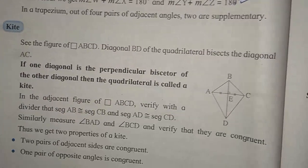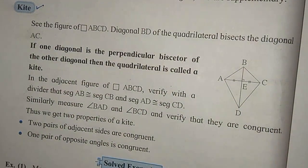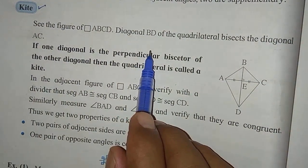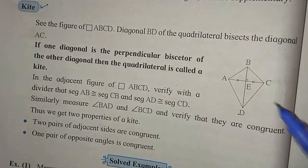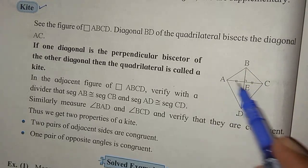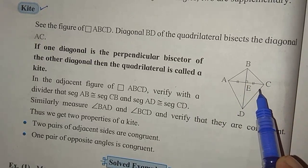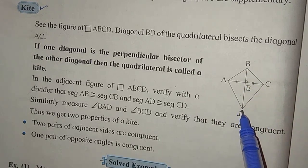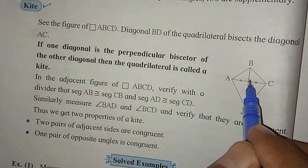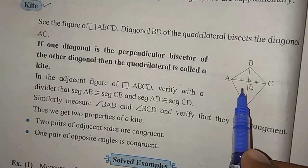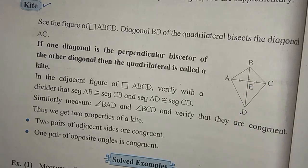We move towards the next type of quadrilateral, that is the kite. In quadrilateral ABCD, diagonal BD bisects diagonal AC, but AC does not bisect BD. The diagonals are perpendicular to each other — the angle at intersection is 90 degrees. But only one diagonal bisects the other.